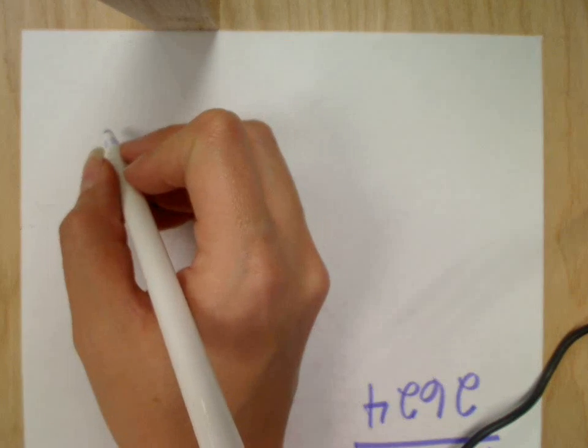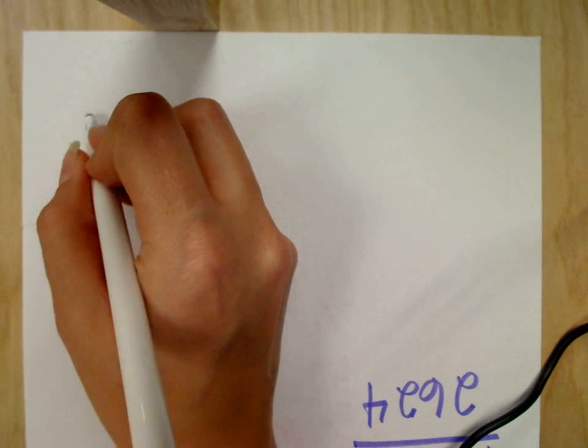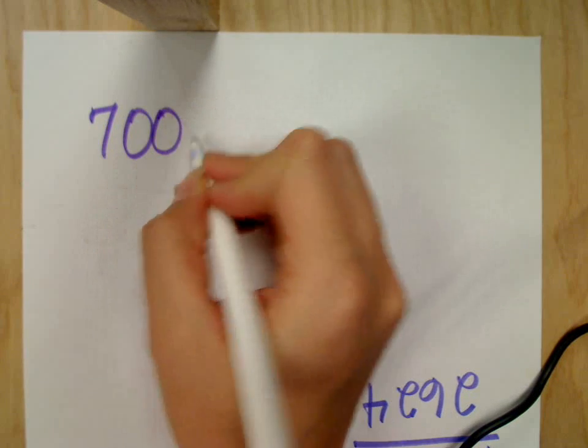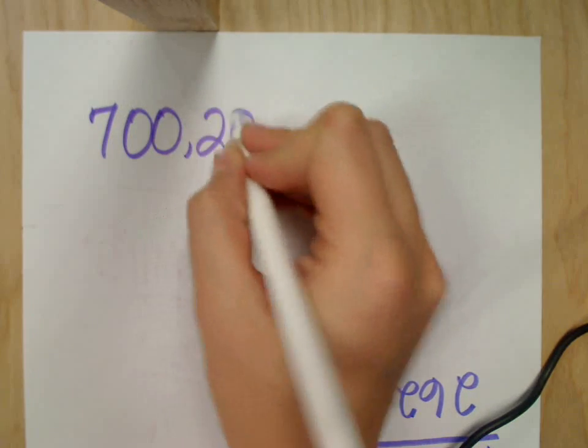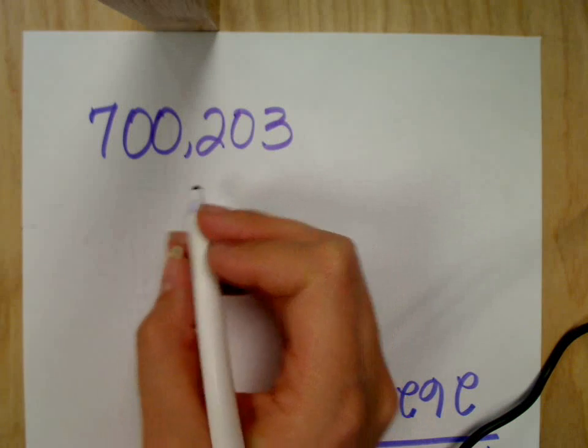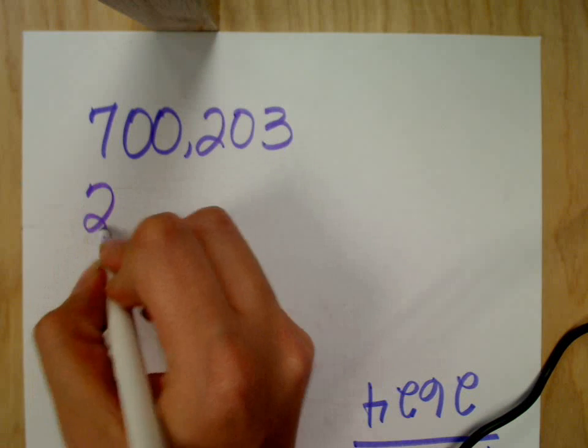The second question is always going to test to see if you know how to borrow from zeros. 700,203. Can you write this down? Yes, please write this.